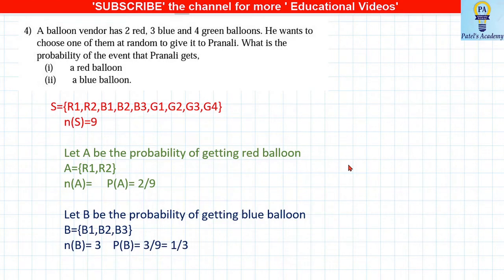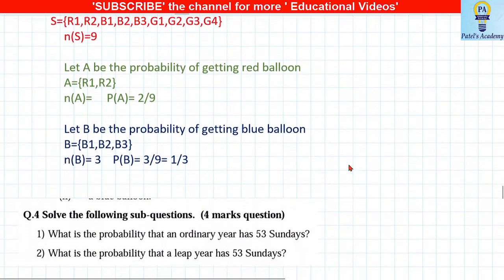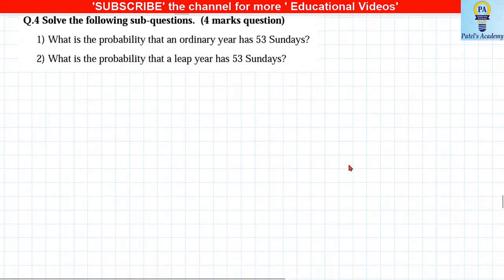A bag contains 2 red, 3 blue, and 4 green balloons; nS = 9. Write sample space: {R1, R2, B1, B2, B3, G1, G2, G3, G4}. P(red balloon) = 2/9. P(blue balloon) = 3/9 = 1/3.